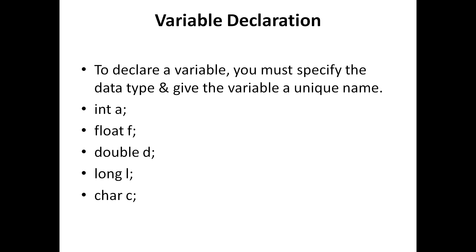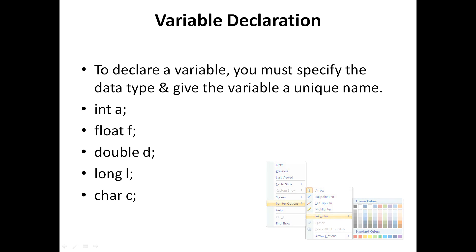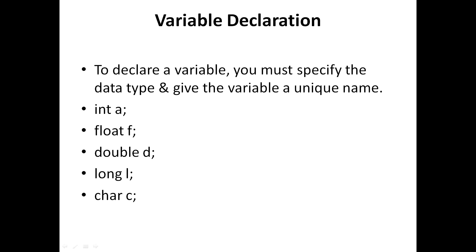For example: int A declares A as integer; float F means F belongs to the float data type; double D belongs to double; long L belongs to long; and char C belongs to the character data type.